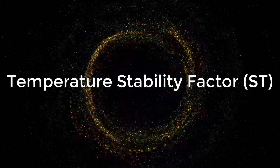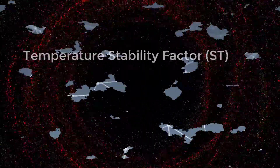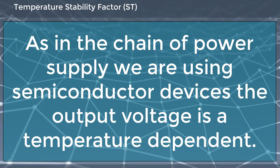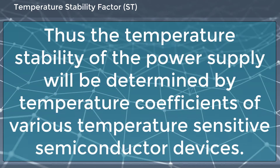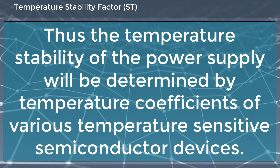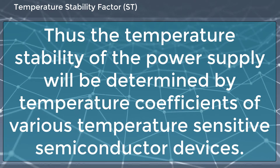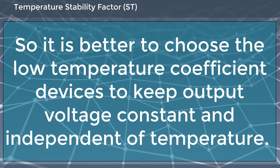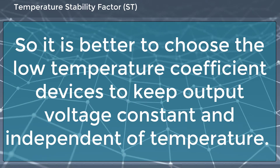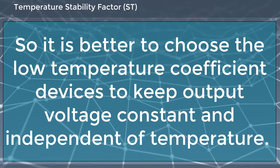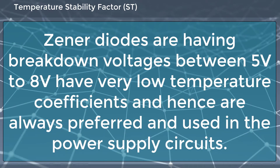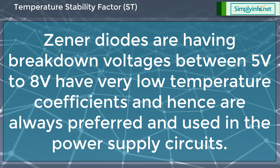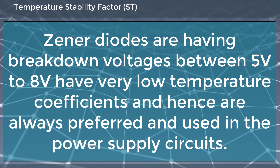The temperature stability factor is ST. In the chain of power supply, we are using semiconductor devices, so the output voltage is temperature dependent. Thus, the temperature stability of the power supply will be determined by the temperature coefficients of various temperature-sensitive semiconductor devices. It is better to choose low temperature coefficient devices to keep output voltage constant and independent of temperature. Zener diodes having breakdown voltages between 5V to 8V have very low temperature coefficients and hence are always preferred and used in power supply circuits.